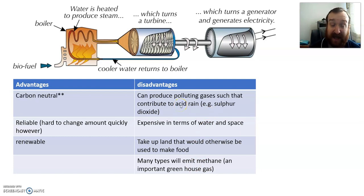Disadvantages: it can produce polluting gases, not carbon dioxide necessarily because it's carbon neutral, but it could produce sulfur dioxide or nitrogen oxides which can contribute to acid rain. It's expensive in terms of water and space because you need land to grow the crops, you need land to create this biofuel. And you need water to grow the crops.